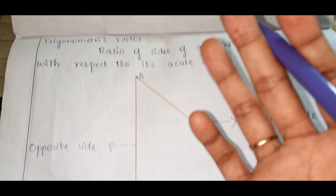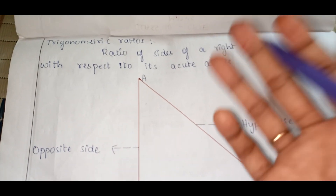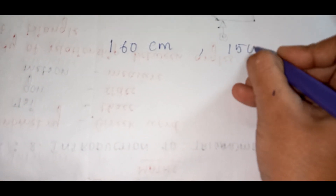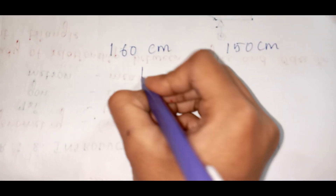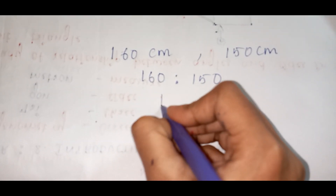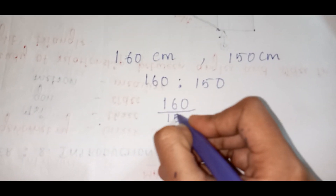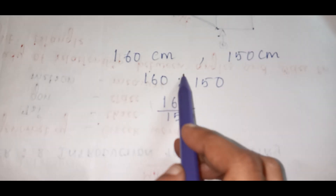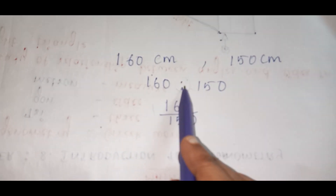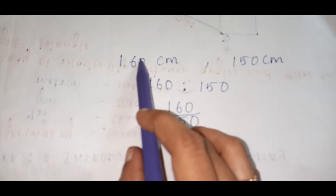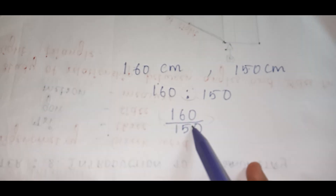For example, I am going to compare the heights of two people in your class. The height of one person is 160 cm and the height of the other is 150 cm. So how will you put it in ratio? 160 is to 150, and this can also be written as 160 by 150. This is how we write a ratio, and it can be expressed in the form of division as well, because ratio means comparison of two quantities by division.